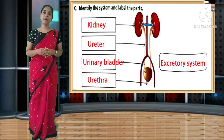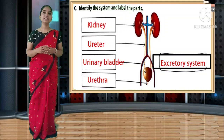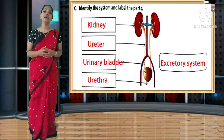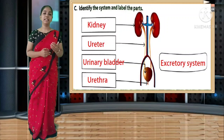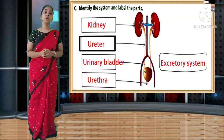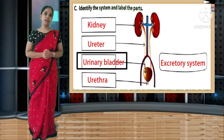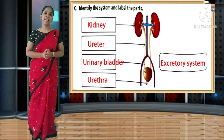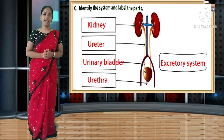Identify the system and label the parts - it is the excretory system. Spelling: E-X-C-R-E-T-O-R-Y. The first part is kidney, spelling K-I-D-N-E-Y. The next part is ureter, spelling U-R-E-T-E-R. Then urinary bladder, spelling U-R-I-N-A-R-Y B-L-A-D-D-E-R. And the last part is urethra, spelling U-R-E-T-H-R-A.